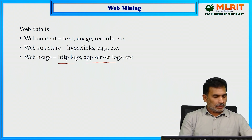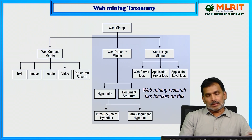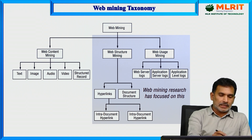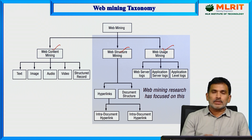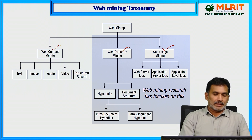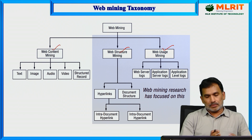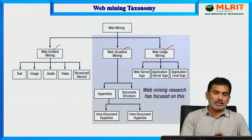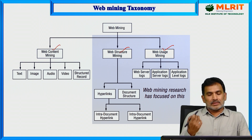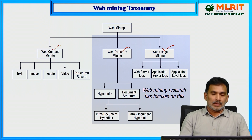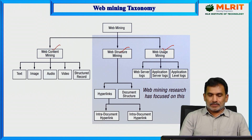In the web mining taxonomy, there are three types: based on content, based on structure, and based on usage. Content includes text, image, audio, video, and structured records in structured and unstructured formats. Web structure mining is based on hyperlinks and document structure — how documents are linked — and link analysis is a major focus of research in this area.